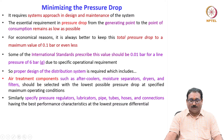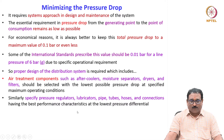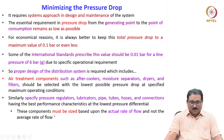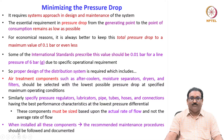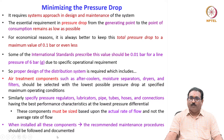Similarly, specify the pressure regulator, lubricators, pipes, tubes, hoses and connections having the best performance characteristics at the lowest pressure differential. These components must be sized based on the actual flow rate and not the average flow rate. When installing all these components, the recommended maintenance procedure should be followed and documented every time for future reference.